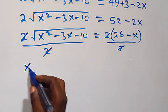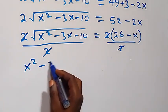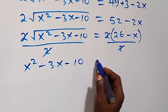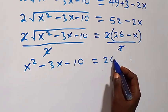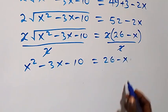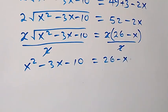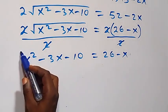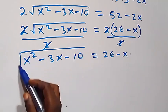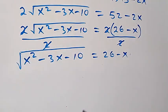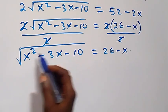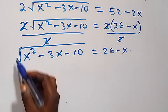We are left with: square root of x squared minus 3x minus 10 equals 26 minus x. Since this still contains a square root, the next step is to take the square on both sides to cancel the square root.